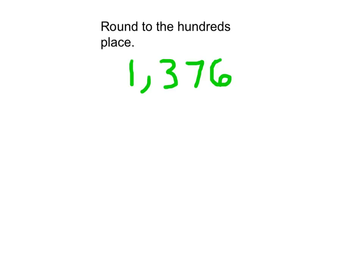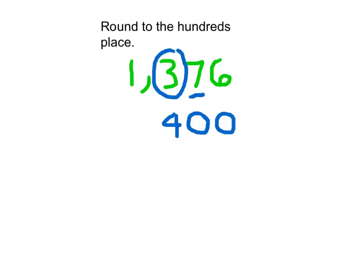Here's another problem — it says round to the hundreds place. Find that place value and circle that digit: we circle the hundreds place, which is the 3. Move to the right and underline: we underline the 7. Looking at that underlined digit, 5 to 9 means add 1, so the 3 becomes a 4. Digits to the right change to 0 — the 7 and 6 each change to 0. All other digits stay the same. A common mistake is forgetting that last step: 1,376 rounded to the nearest hundreds place is not 400, it is 1,400, where all other digits stayed the same.